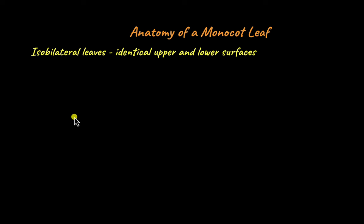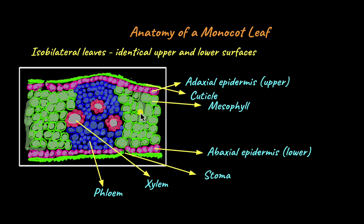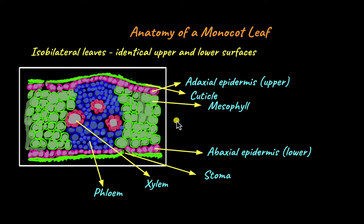To understand that, let's take a look at how the transverse section of a monocot leaf looks like under the microscope. In terms of structures, a monocot leaf is quite similar to the dicot leaf — they also have the adaxial and abaxial epidermis, cuticle covering both epidermal layers, phloem, xylem, and mesophyll cells. However, in monocot leaves the mesophyll is not differentiated into palisade and spongy mesophyll. Instead, it is just closely packed mesophyll cells, not differentiated into a distinct upper and lower layer. That's why monocot leaves are called isobilateral leaves.